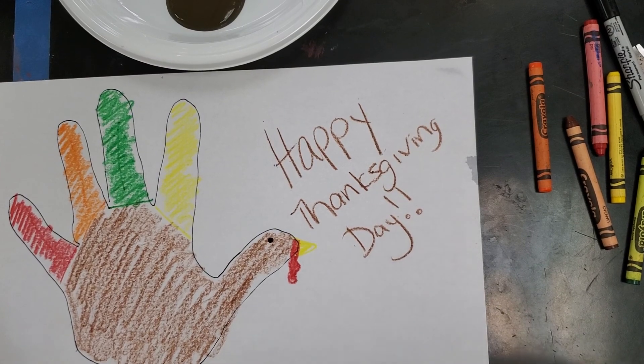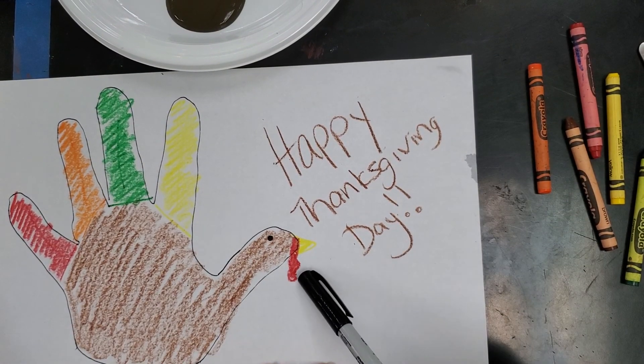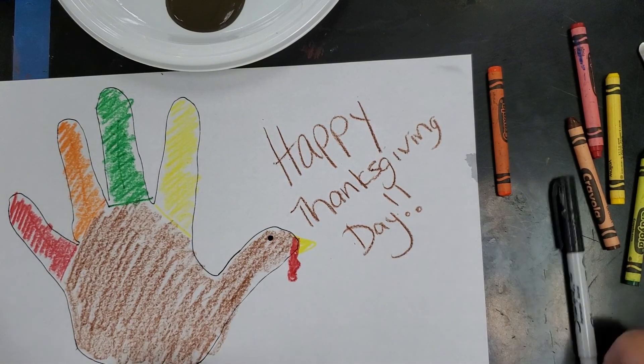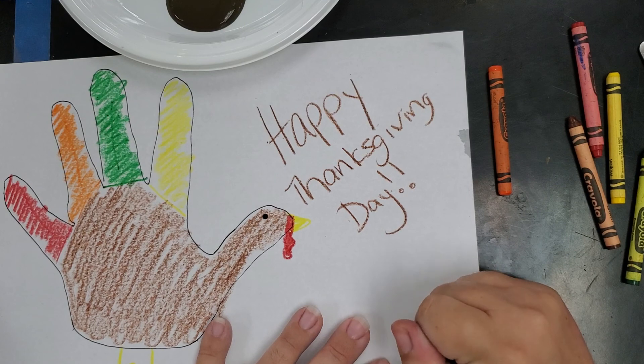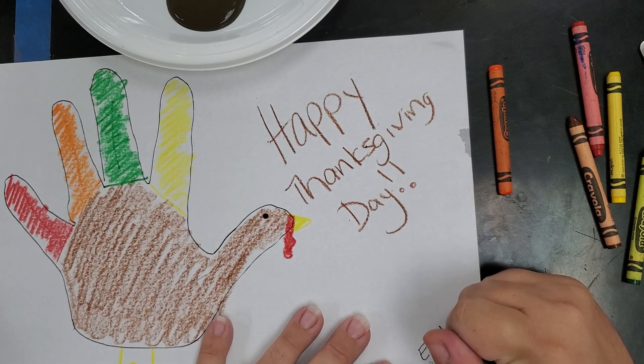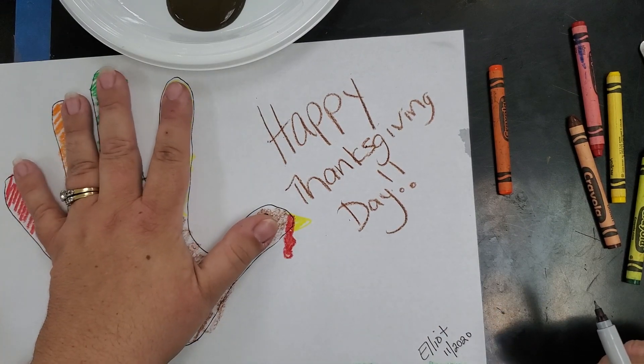There is my turkey, guys. I colored the feathers in the body, I wrote Happy Thanksgiving Day. A few things - I looked it up, that's called a waddle. And if you see, I added it, it's supposed to go on the top of the beak. I'm going to put my name down here and put the year. Today is, this year is 11 and then 2020. Then you can put it away, and next year you can put your hand and see how much your hand has grown.